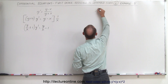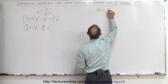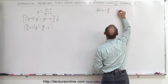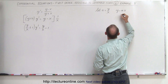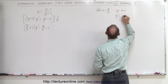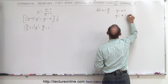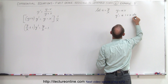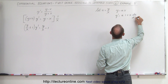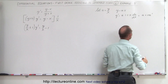Let u equal y over x, which means that y is equal to u times x. Then y prime can be written using the product rule as the first times the derivative of the second plus the second times the derivative of the first, giving us y prime equals u plus x times u prime.